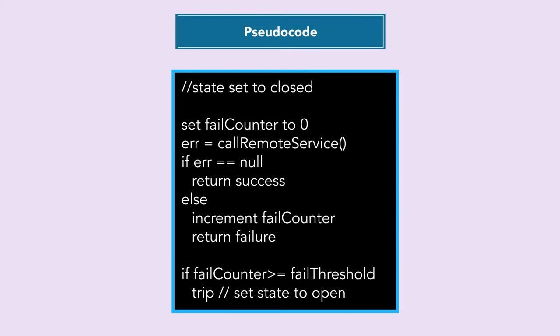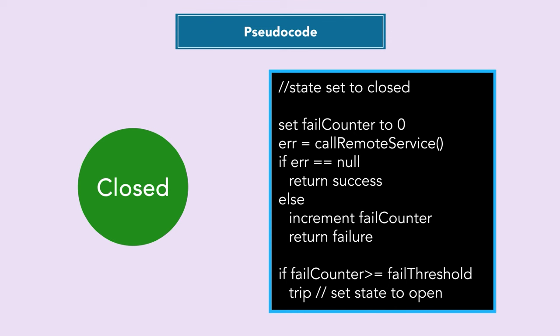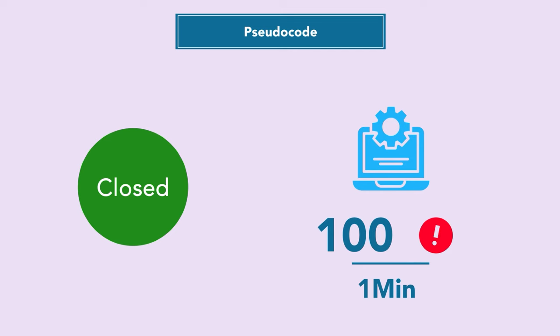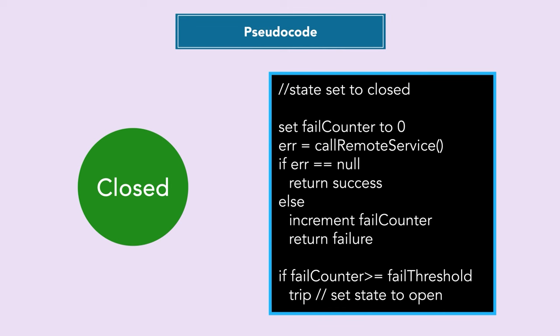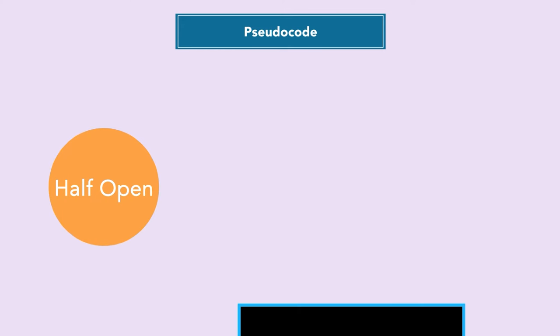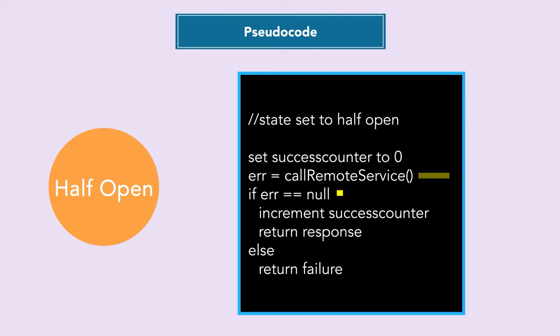Here is simple pseudocode for the different states. In closed state, the circuit breaker maintains a failure counter set to zero, forwards calls to the remote service, returns success if no issues, or increments the failure counter on errors. If the failure counter exceeds a threshold — for example, jumping from 5 errors per minute to 100 — the circuit trips to open state. In open state, a timeout starts and failures are returned immediately. In half-open state, a success counter is used; successful calls increment it and may trigger a switch back to closed, while failures return the circuit to open state.